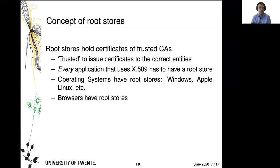Trusted means they are trusted to issue certificates to the correct entities — in other words, they apply a verification process assumed to be practicable, secure, and able to identify the correct entity. Every application that uses X.509 in practice must have a root store. Root stores are actually included in every operating system you are likely to encounter — in particular Windows, operating systems by Apple, and various Linux versions — but browsers can also have root stores. For example, Mozilla Firefox to this day has its own root store, whereas other browsers make use of the operating system's root store.